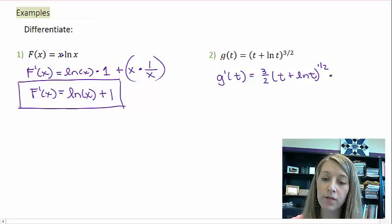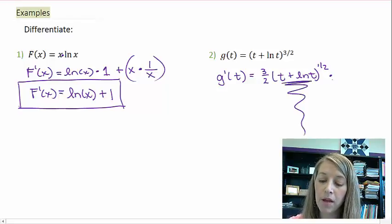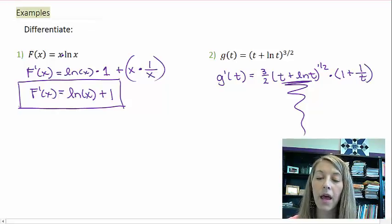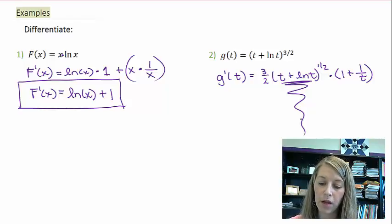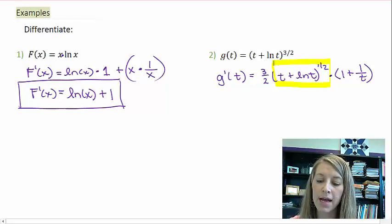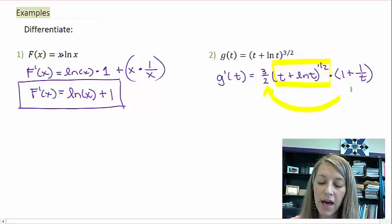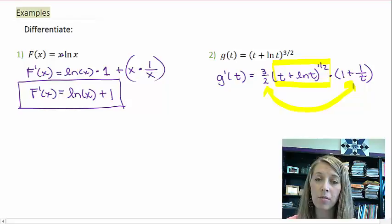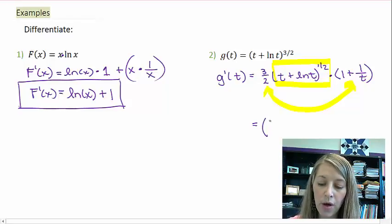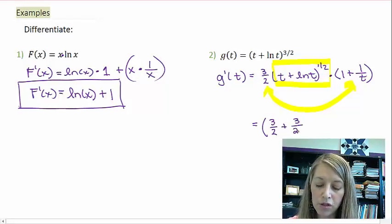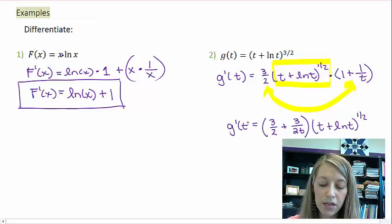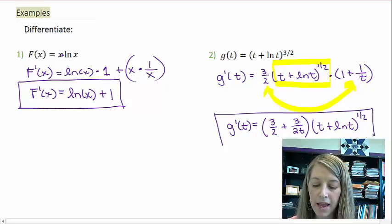Now I need to multiply that times the derivative of the inside. The derivative of t is just 1 plus the derivative of natural log of t, which is 1 over t. I have taken the derivative. To simplify, I can rewrite it as a square root since it is all to that power. I'll distribute the 3 halves as 3 halves plus 3 over 2t, times t plus natural log of t to the 1 half power. If you did not choose to distribute the 3 halves, that would also be an acceptable answer.